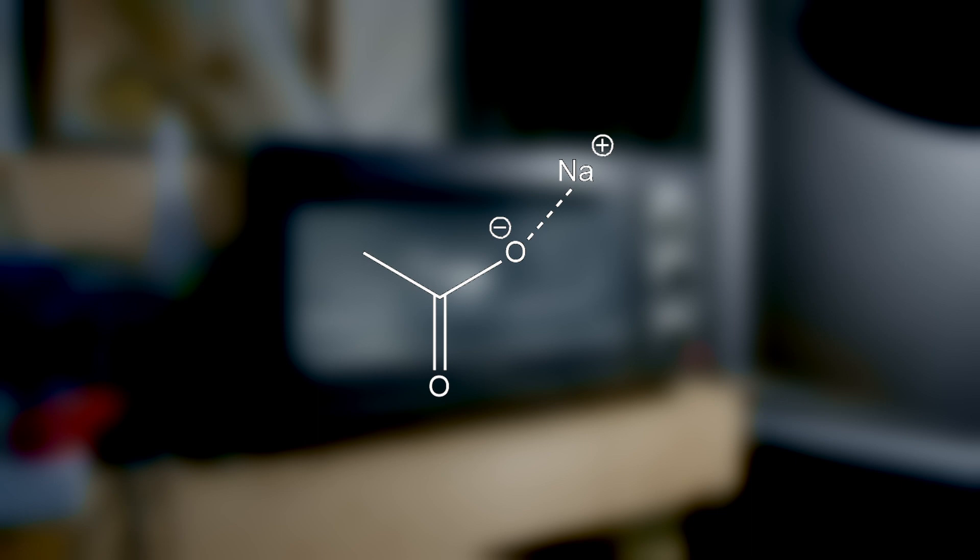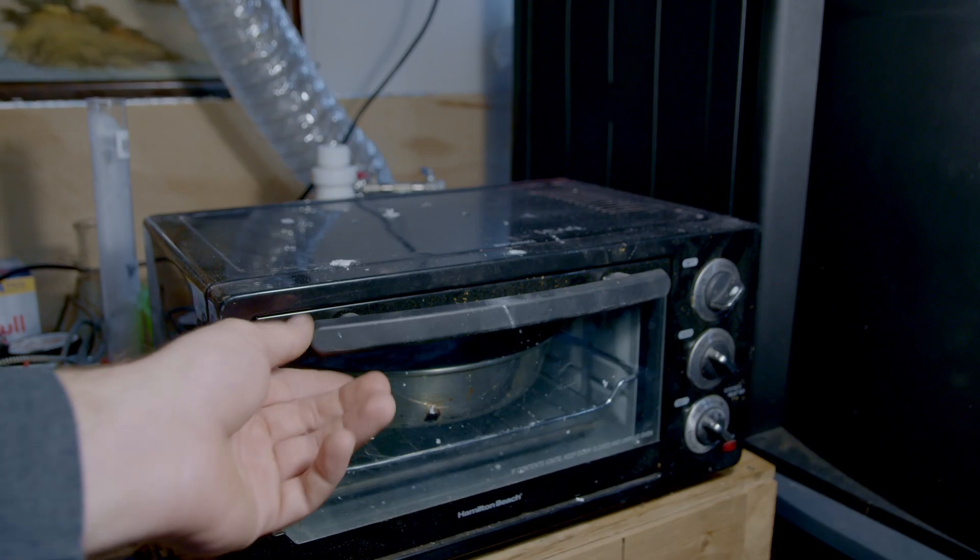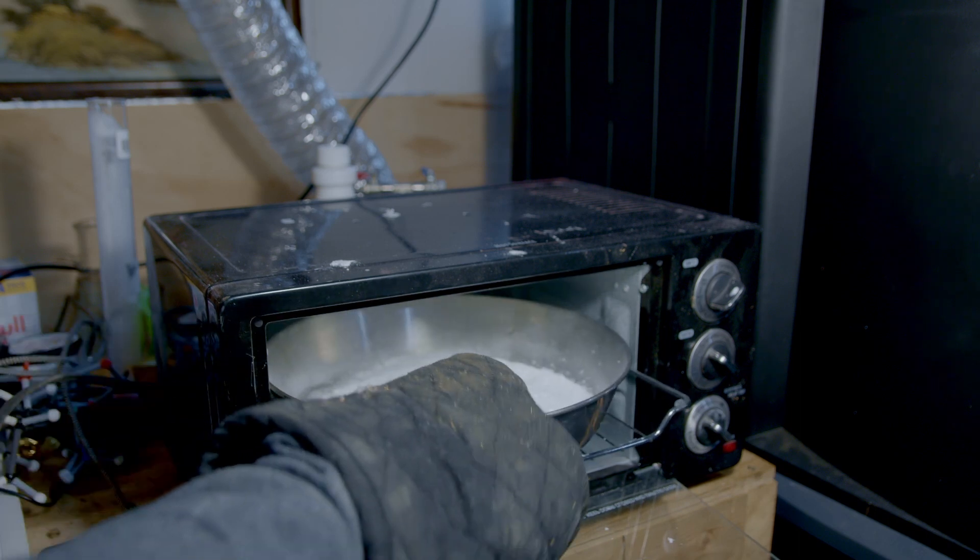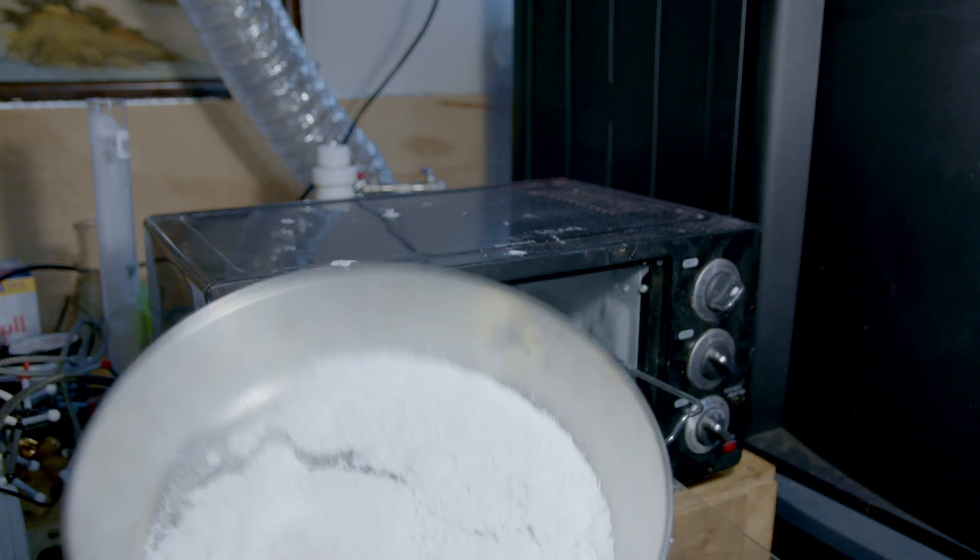It's important we do this to get all the water off or we're going to have water in our acetic acid at the end. I transferred it to a bigger dish and I ground it up a little bit, but you want it to be a nice fine powder like this.